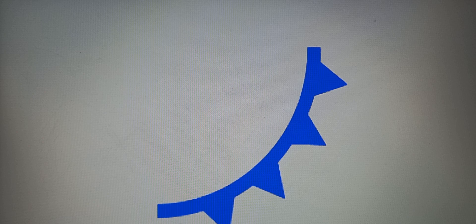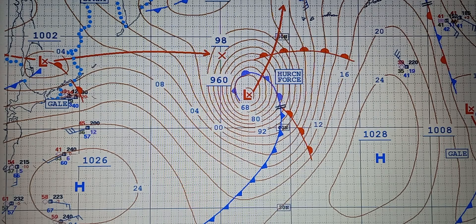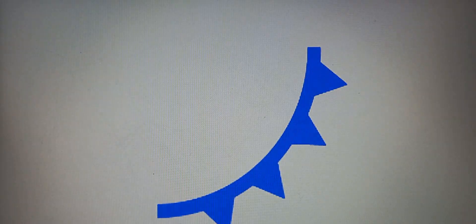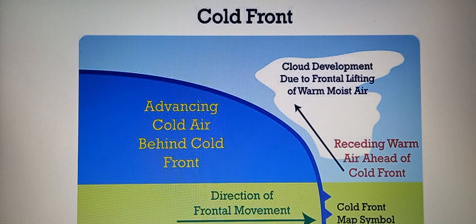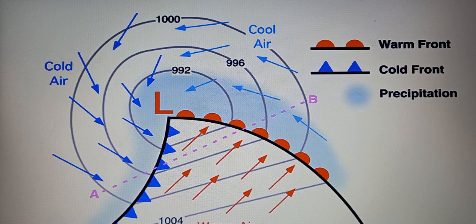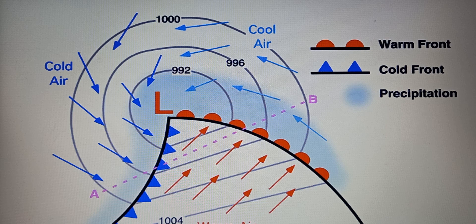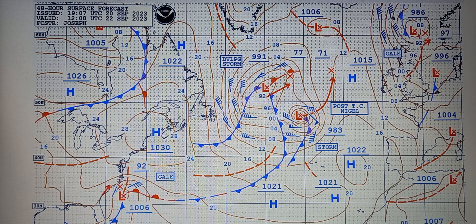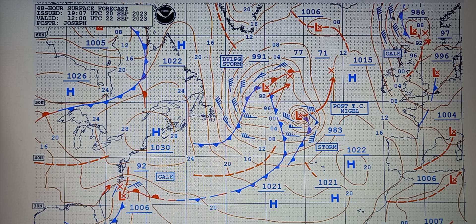When a cold front is associated with a low-pressure system, it typically represents a more dynamic, potentially more severe weather situation. In this scenario, the cold front is advancing into an area of warmer, less dense air, causing the warm air to rise and cool rapidly, leading to the formation of clouds, precipitation, and potentially thunderstorms.